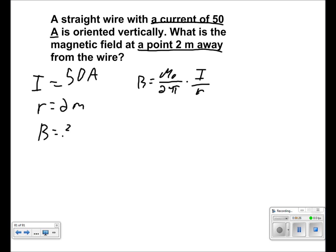Plugging in our numbers, we get that B is equal to, since mu initial is a constant, B is equal to 4 pi times 10 to the negative 7 over 2 pi times 50 over 2.